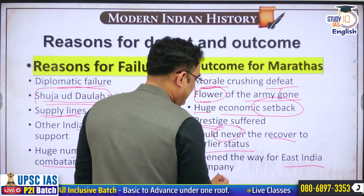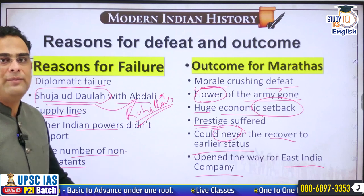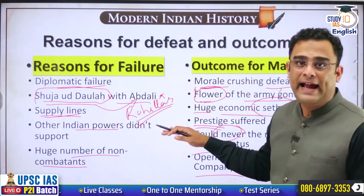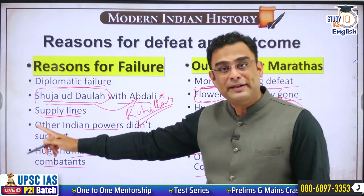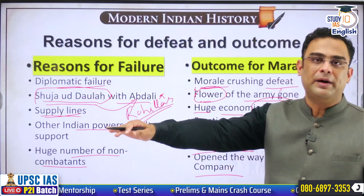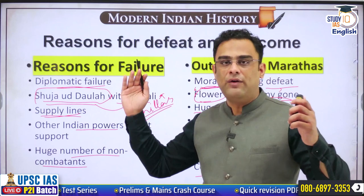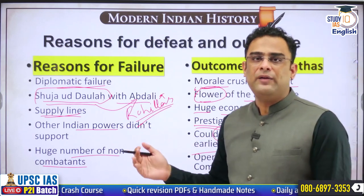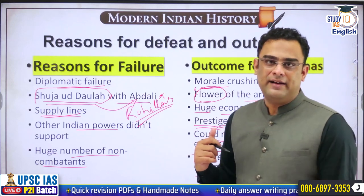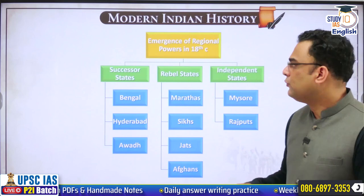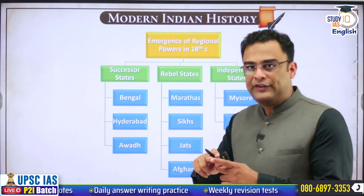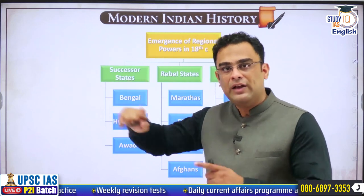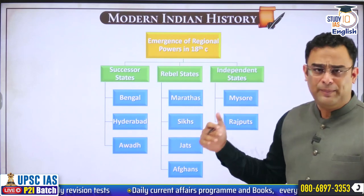After the Third Battle of Panipat, the East India Company would become the most significant power in India. By this time they had already won the Battle of Plassey, and in 1764 they would win the Battle of Buxar, completing their control over eastern India — Bengal, Bihar and Orissa — paving the way for the rise of the East India Company. Had the Marathas won the Third Battle of Panipat, the East India Company would not have found the space to rise the way they did in late 18th and early 19th centuries. That completes our discussion on Marathas up to the Third Battle of Panipat. Their history after that — the Anglo-Maratha Wars — will be discussed shortly.